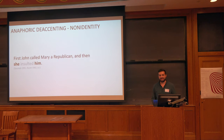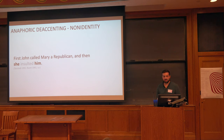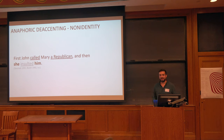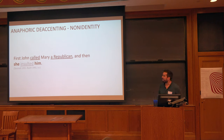One more example to show that this has also been proposed for verbs, because that's the type of constituent I'm going to look at in my experiments. A pretty famous example: 'first John called Mary a Republican and then she insulted him.' The idea here is that there's some kind of pragmatic identity between calling someone a Republican and insulting them. So by virtue of having this antecedent 'call a Republican,' we can de-accent 'insult.'